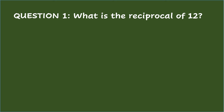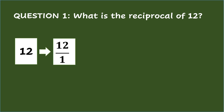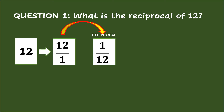Question 1. What is the reciprocal of 12? In getting the reciprocal of a whole number like 12, the first step is to change the whole number to an improper fraction using the denominator of 1. So, 12 will become 12/1. Then, to get its reciprocal, just invert the fraction. So, 12/1 will become 1/12.